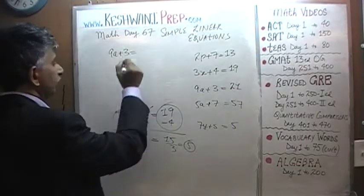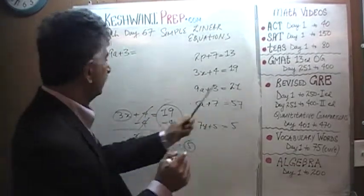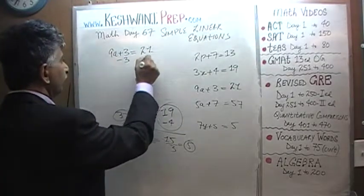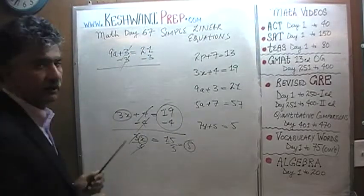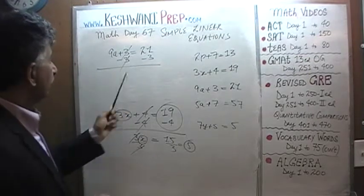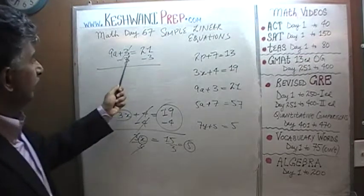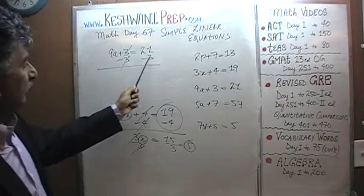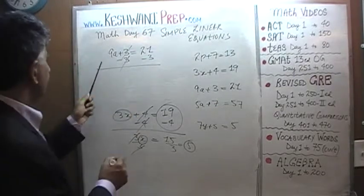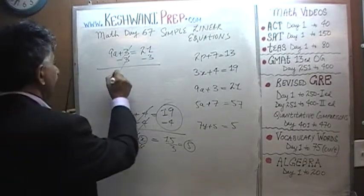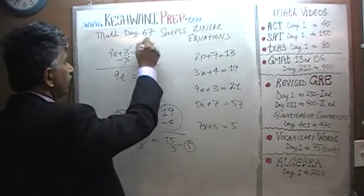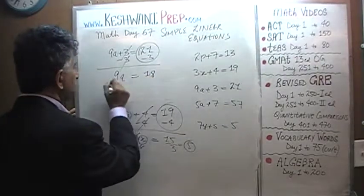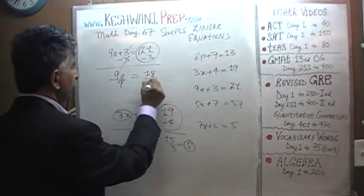Number 3: 9a plus 3 equals 21. Subtract 3 from both sides — 3 gets knocked out. Positive 3 becomes negative 3 when you move it to the other side. 9a comes down. We end up with 21 minus 3, which is going to be 18. Divide both sides by 9.